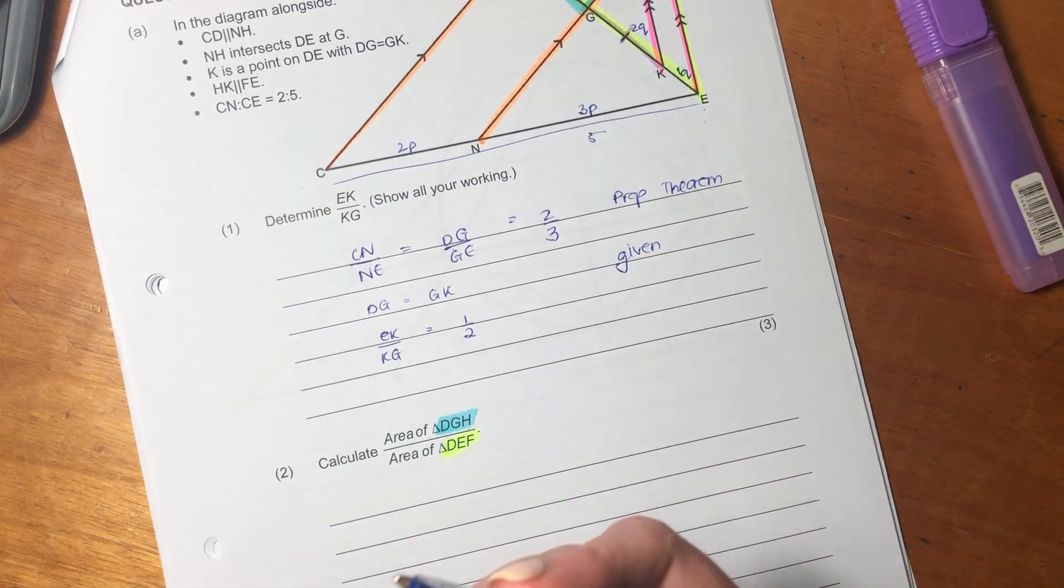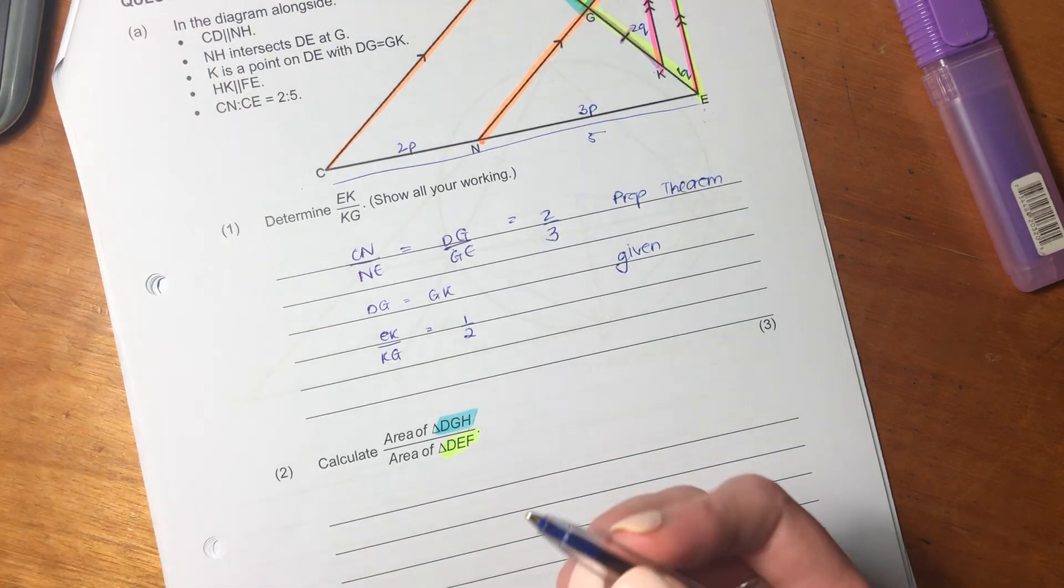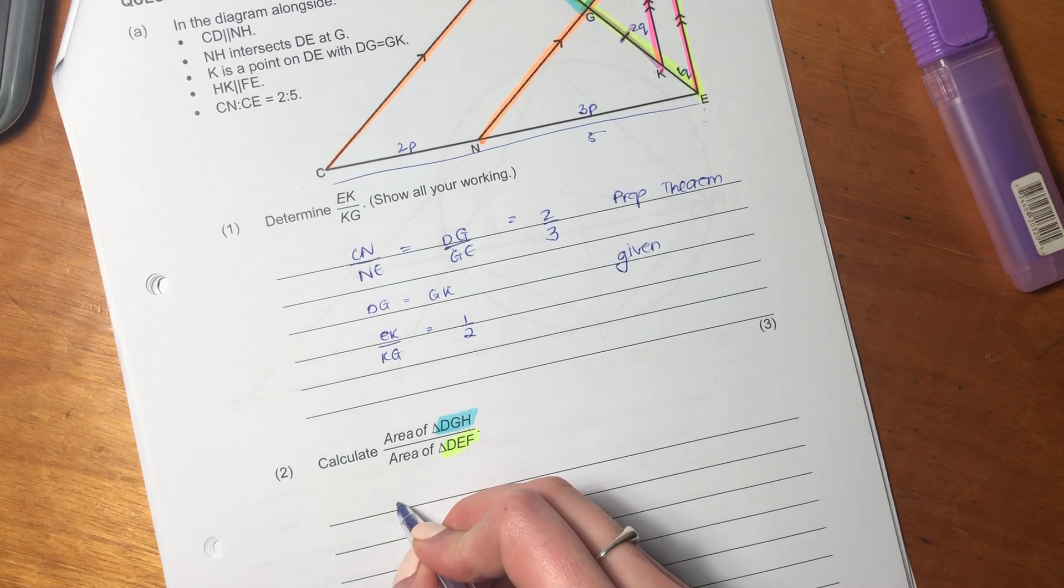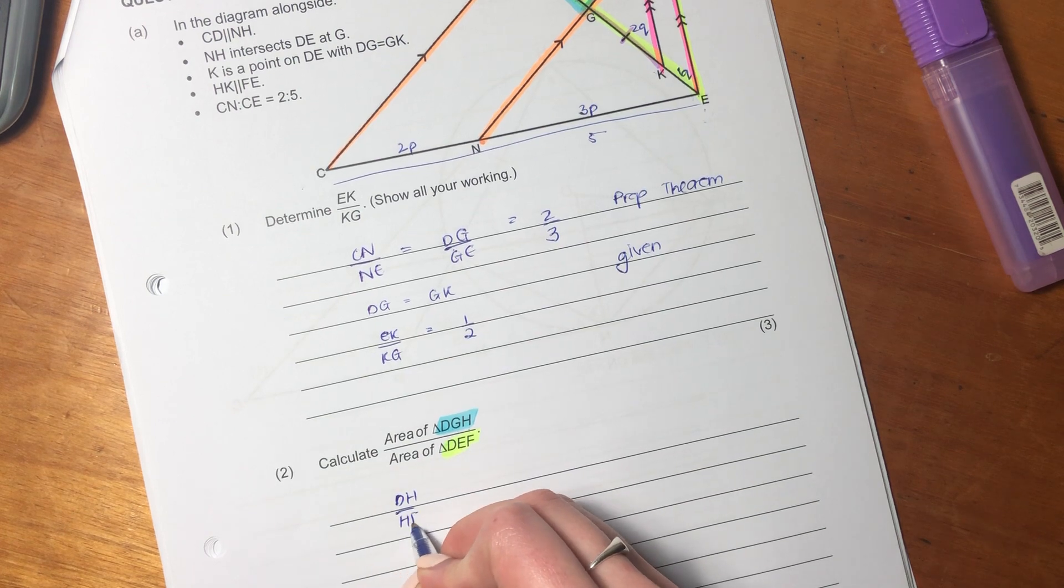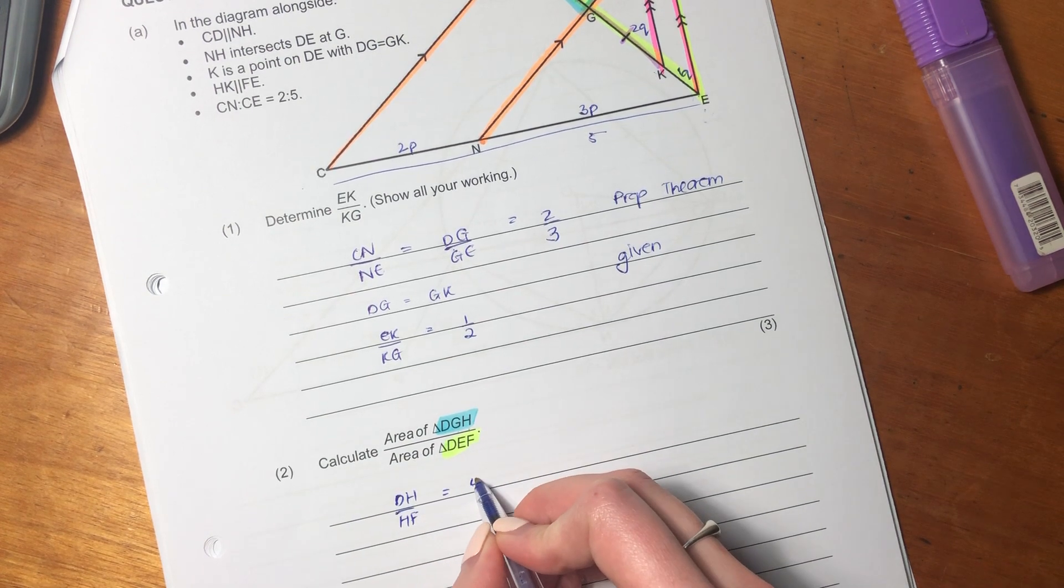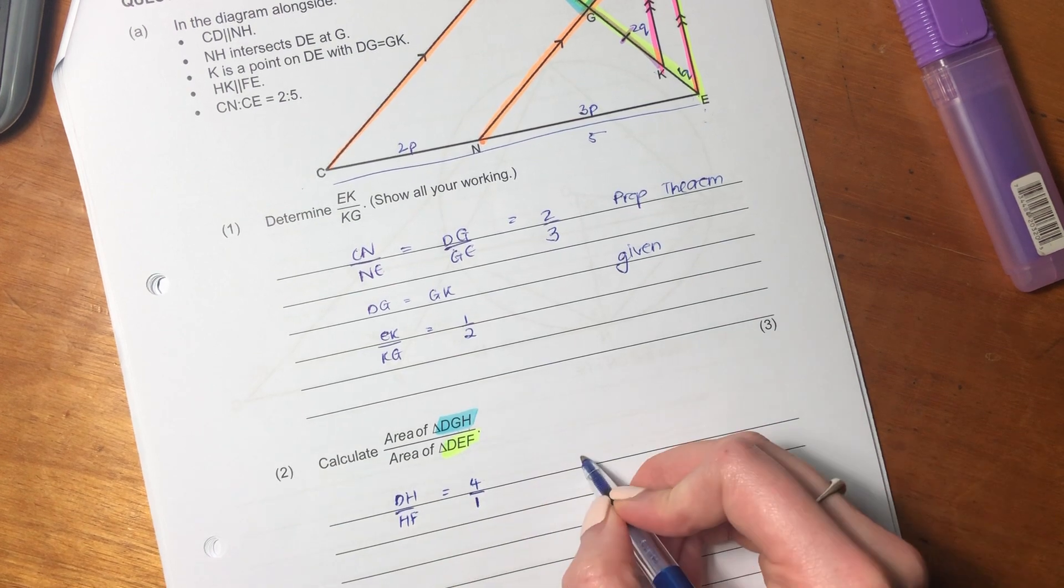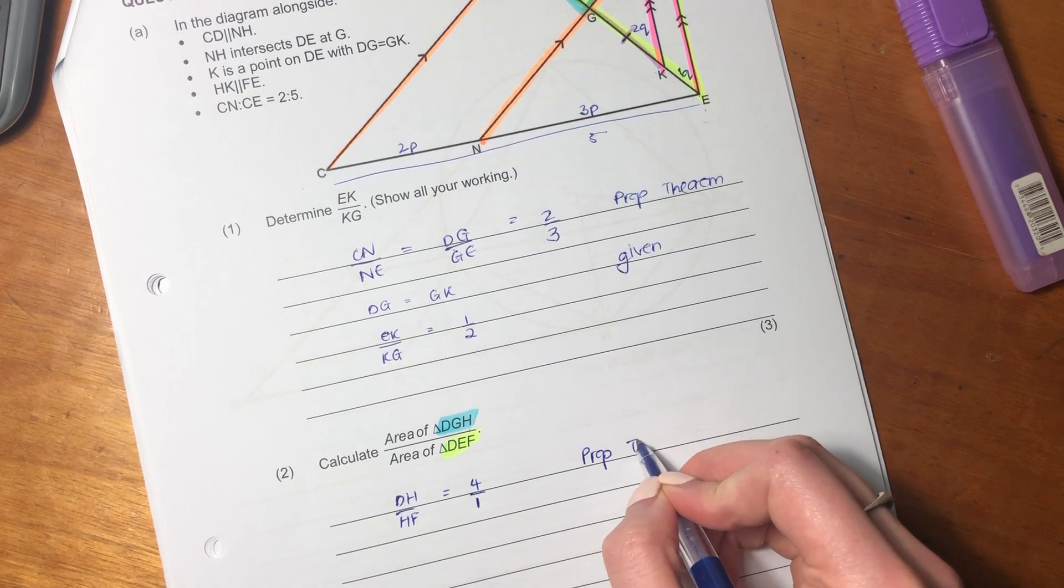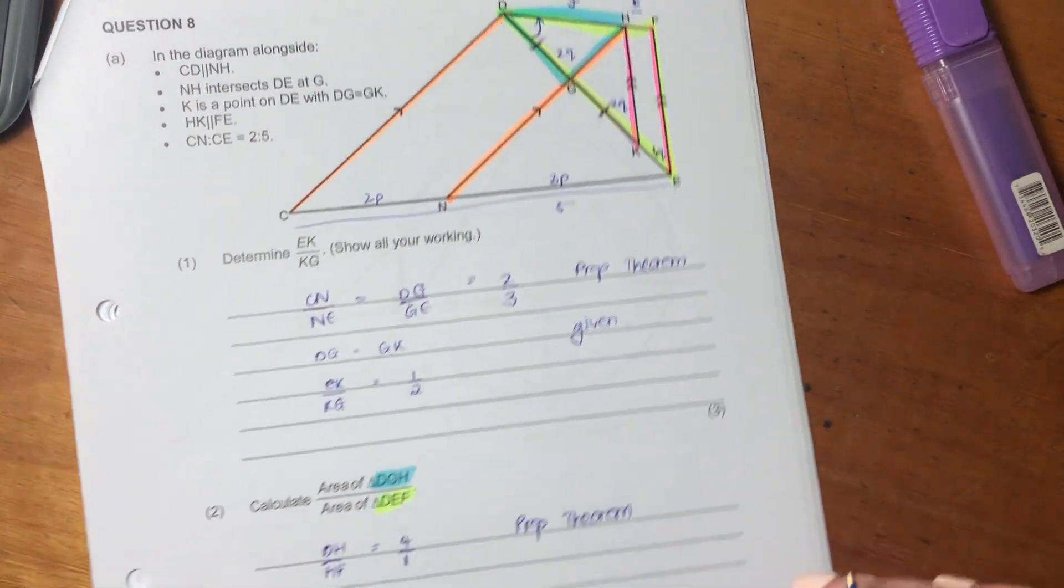So let us write this out. So we're going to say, just so that the marker knows what we're talking about, we're going to say, well, DH over HF equals 4 over 1. And we're going to say, yeah, that's a proportionality there. We're literally just writing out what I showed you over there.